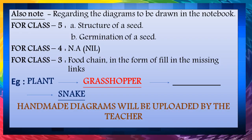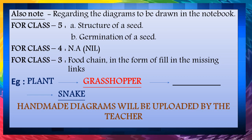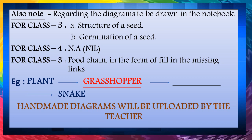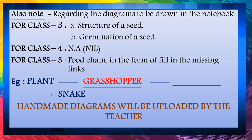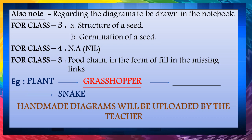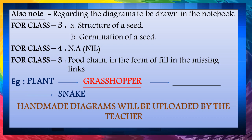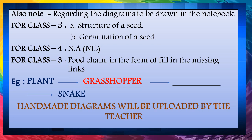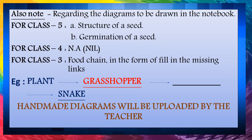Instructions regarding the diagrams to be drawn in the notebook: For class 5th, the diagrams are the structure of a seed and germination of a seed. For class 4th, there is no diagram. And for class 3rd, a food chain in the form of missing links will be there. The example is given. Handmade diagrams will be uploaded by the teacher.